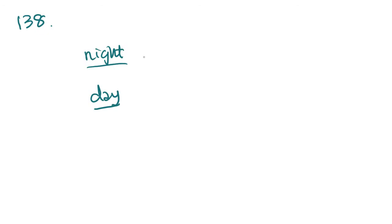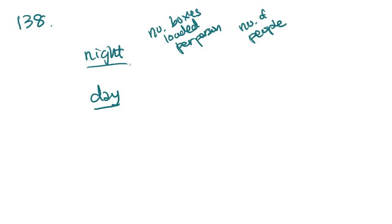We need to find the number of boxes loaded per person and the number of people on both crews. The problem says each night worker loaded 3/4 as many boxes as a day worker, so that's the same as a ratio of 3 to 4 — if the day crew loaded 4 boxes per person, then the night crew loaded 3. The night crew has 4/5 as many workers, so if there are 5 people on the day crew, there must be only 4 people on the night crew.